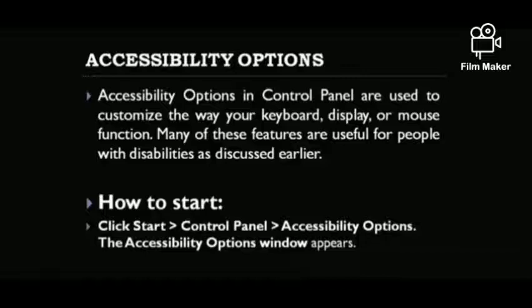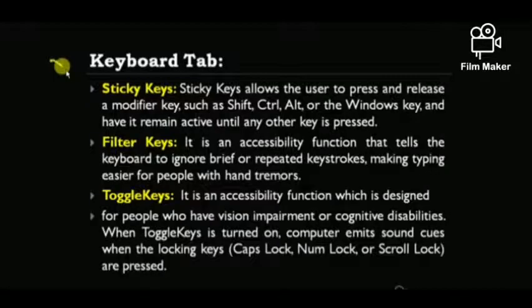Accessibility options in Control Panel are used to customize the way your keyboard, display, or mouse function. Many of these features are useful for people with disabilities. To start, go to Start menu, click on Control Panel, then Accessibility Options — the Accessibility Options window appears.